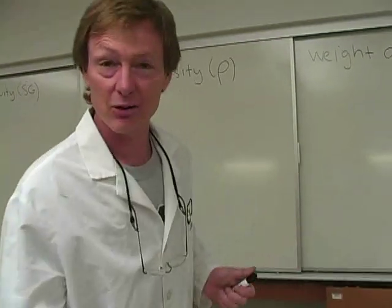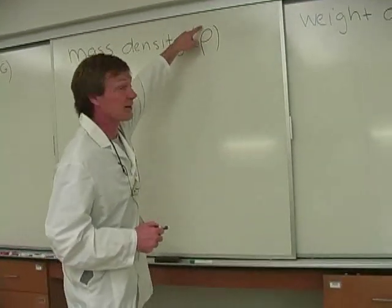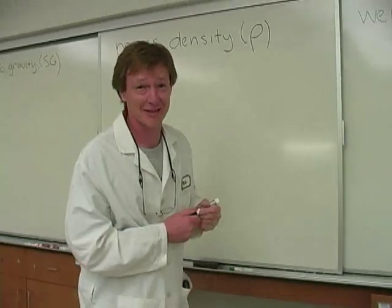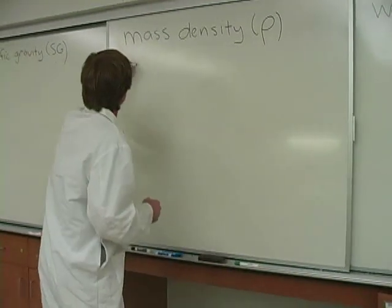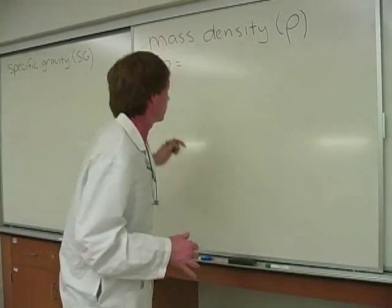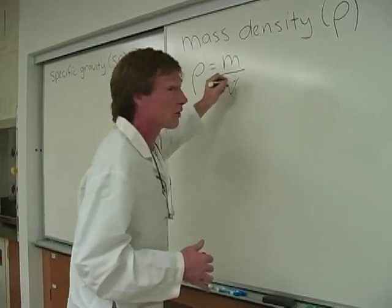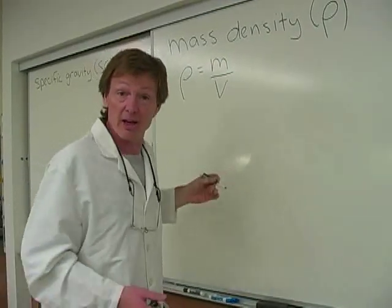So mass density is given by this Greek letter rho. It looks like a P. It doesn't have that little sticky up part. That's science talk. Mass density, just like the sponge, it's mass per volume. So we've got mass over volume. And the units are going to be those of mass per volume.